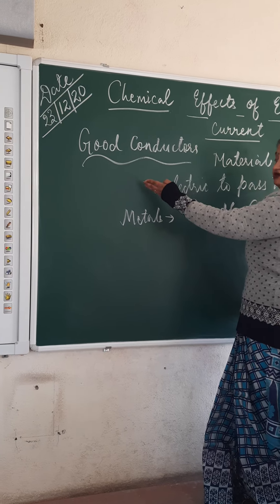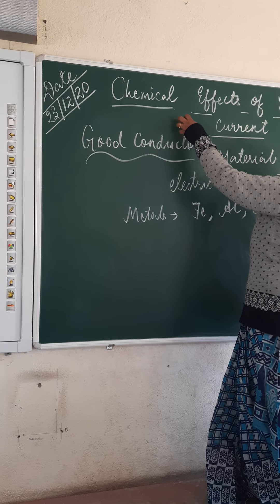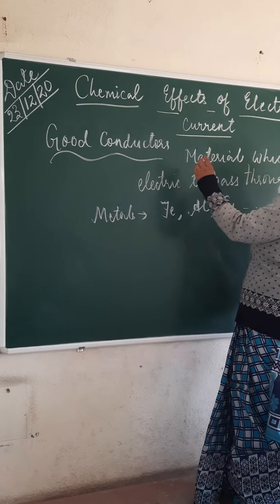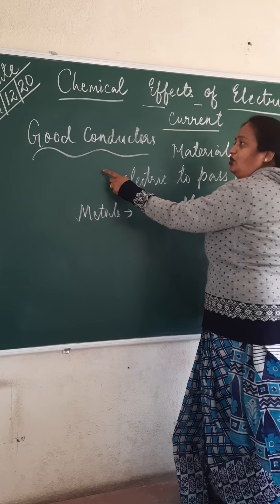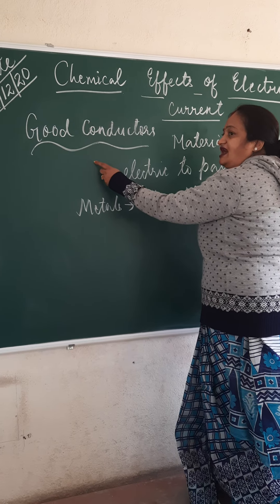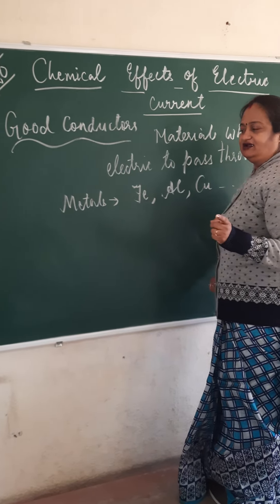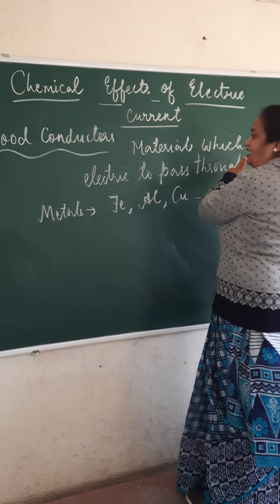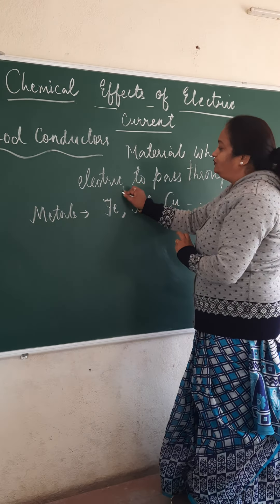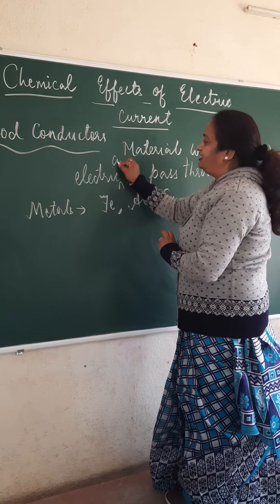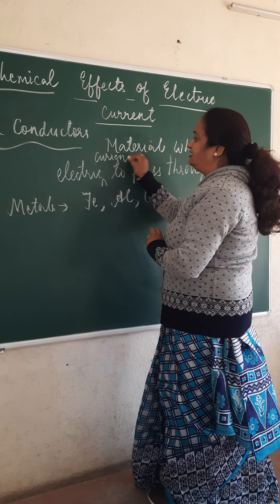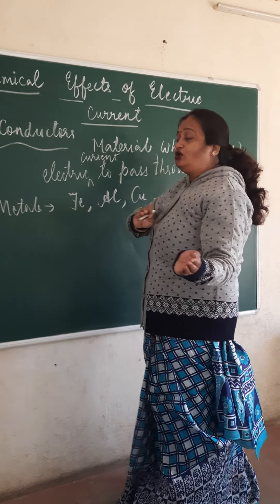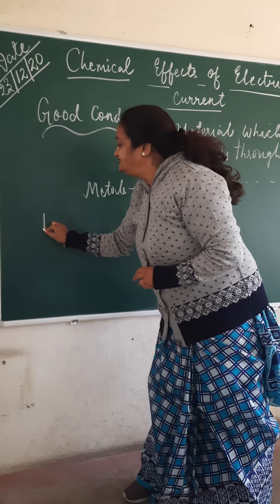So the first term for this chapter — before you understand the meaning of chemical effects of electric current, you should know what is meant by good conductors and bad conductors. Materials which allow electric current to pass through them are known as good conductors.